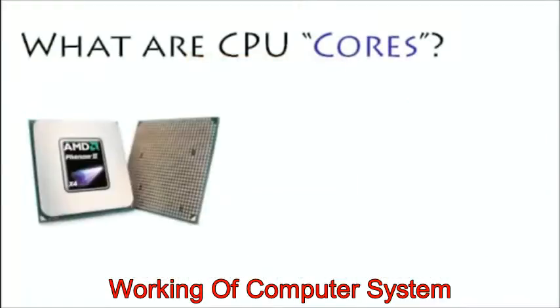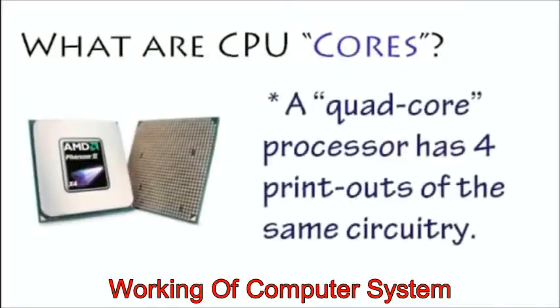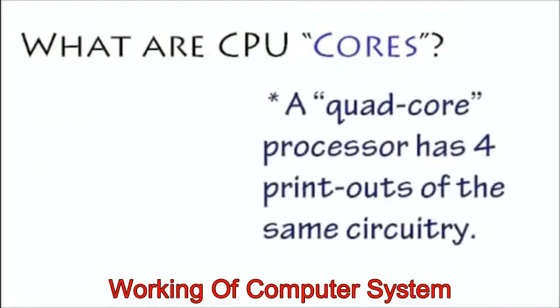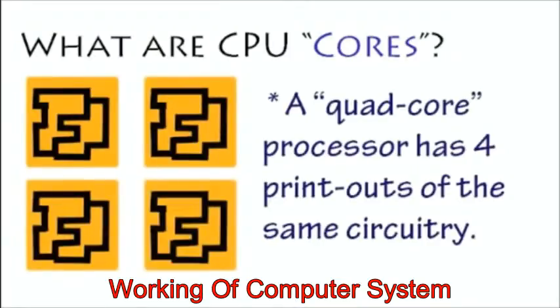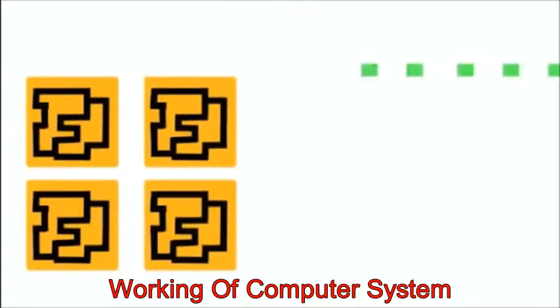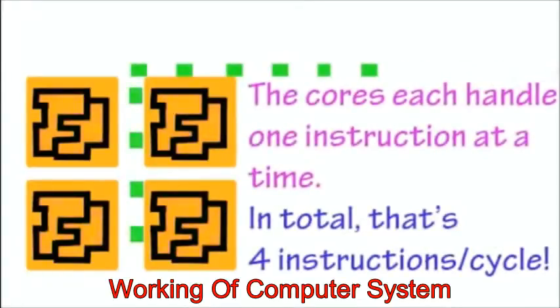The processor I have is a quad core. That means that there are four copies of the same transistor circuitry within one chip. With four cores, my processor can execute four times as many instructions at a time than if it only had one core.